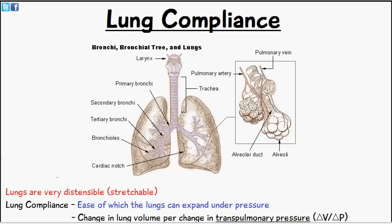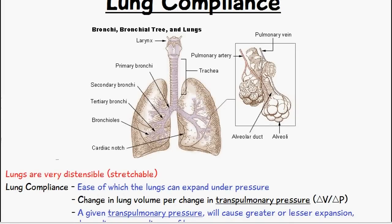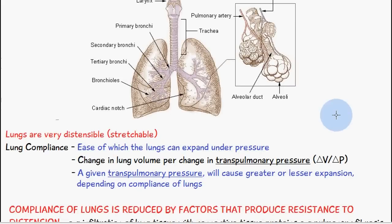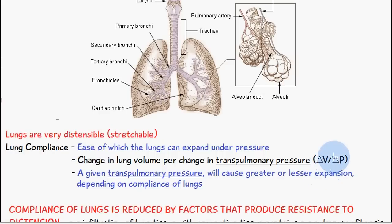Distensible is another word for stretchable, so the lungs can stretch. Lung compliance basically means it's the ability of the lungs to expand under pressure. It's also known as a change in lung volume per change in transpulmonary pressure — that's the more complicated way of explaining it — based on changes in volume divided by changes in pressure.